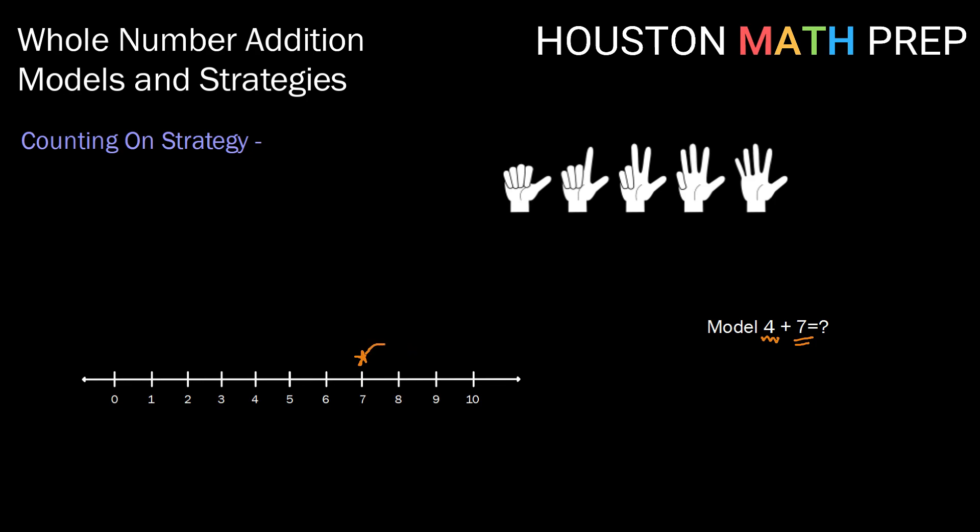So I'm going to go eight, nine, ten, eleven. So I started at the larger number seven and I counted on four more to land at eleven. So that idea of starting at one and counting up however many jumps is the counting on strategy.